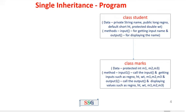The second class is the derived class, named Marks. It contains data members m1, m2, and m3 — all three are integer variables declared as protected. The Marks class contains two methods. The first method, input_one, calls the input method of the base class Student and gets inputs for register number, height, weight, m1, m2, and m3, because register number, height, and weight are inherited from the base class Student.